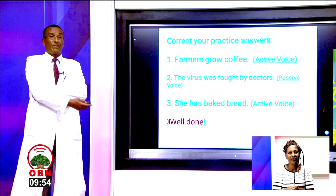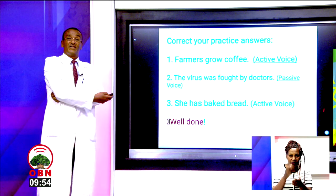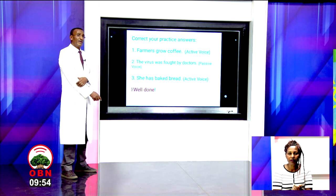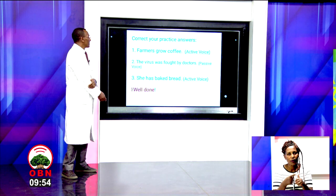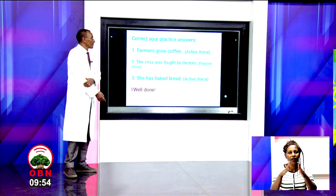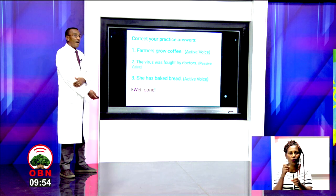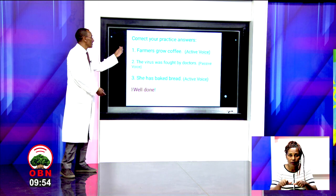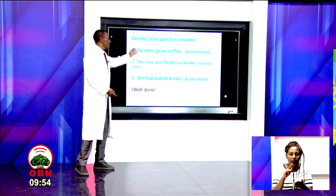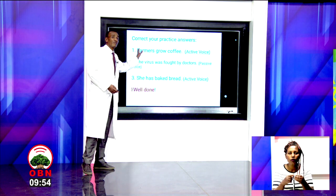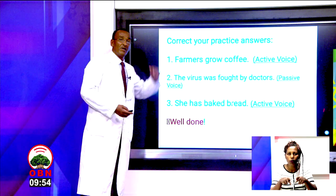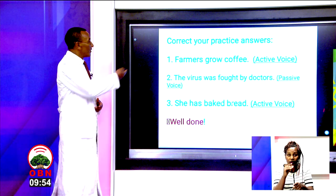Correct your practice answers now. Number one: farmers grow coffee. It is active. It talks about who does the action — it begins with who acts. That is, farmers grow.